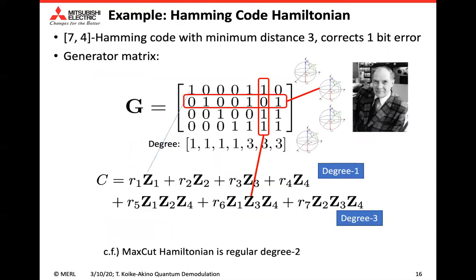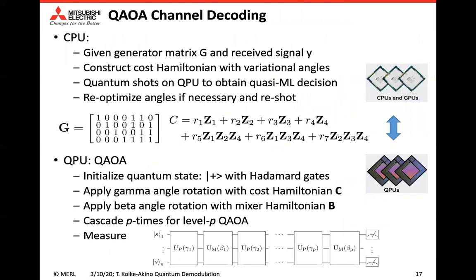Let's see an example. Hamming code has a 4-by-7 generator matrix. Each row is represented by a quantum spin, and those spins have some constraint in code words. Each column has a Pauli-Z rotation product. By maximizing this cost Hamiltonian, we can achieve the maximum likelihood decision. This is different from the MaxCut problem. Our proposal uses both CPU and QPU. In the CPU, we optimize parameters for the cost Hamiltonian; in the QPU, we measure the quantum evolution.